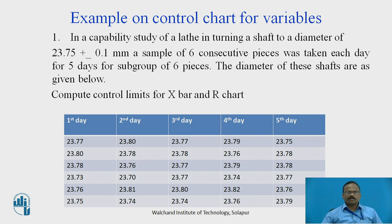Example on Control Chart for Variables: In a capability study of a lathe turning a shaft to a diameter of 23.75 ± 0.1 mm, a sample of six consecutive pieces (a subgroup) was taken each day for five days. The diameters of these shafts are given. We need to compute the control limits for the X-bar and R chart.